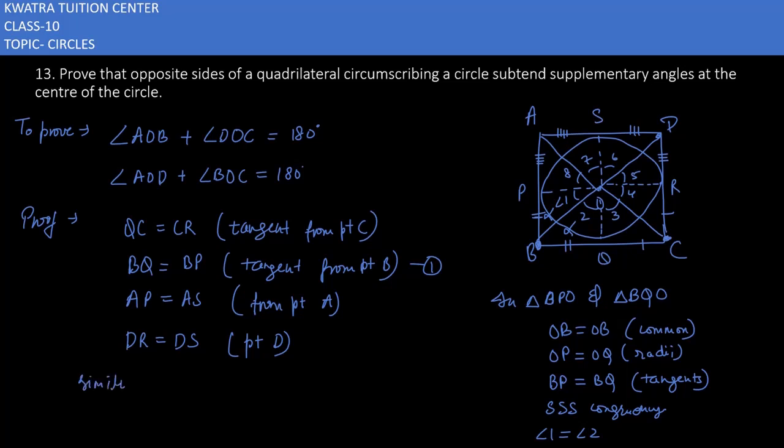Then you can write similarly for all of them. For other triangles like 3 and 4 will be equal. Then 5 and 6 will be equal. Then last one 7 and 8 will be equal. If we look at it now you can see that sum of all these will be 360. Sum of all the angles 1, 2, 3, 4, 5, 6, 7, 8 will be 360. Then we can change it accordingly for this situation.